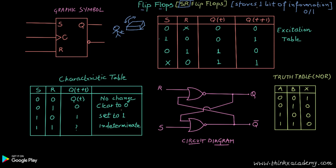The flip-flop stores one bit of information when a signal is passed to it, and this is done using a clock. In the graphic symbol of the SR flip-flop, this is the S signal, this is the R signal, and SR basically means set and reset. We will also understand the meaning of set and reset in the SR flip-flop.